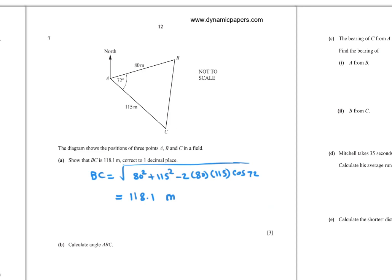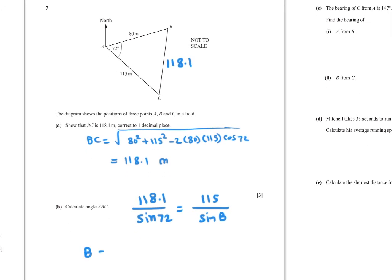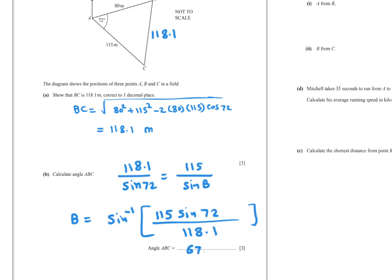Part (b): Calculate angle ABC. Using the sine rule: 115 over sin B equals 118.1 over sin 72. So sin B equals 115 times sin 72 divided by 118.1. Angle B equals sin inverse of (115 sin 72 divided by 118.1) equals 67.8 degrees to one decimal place.